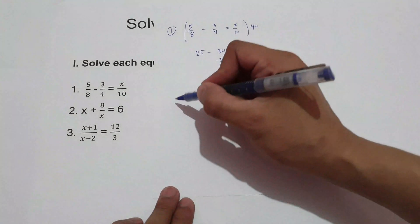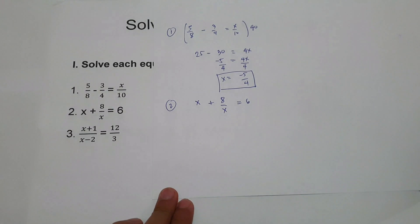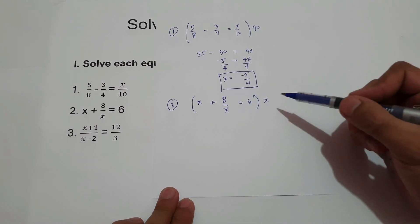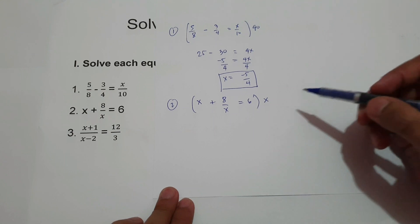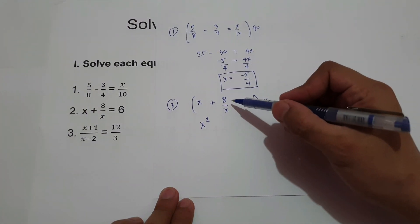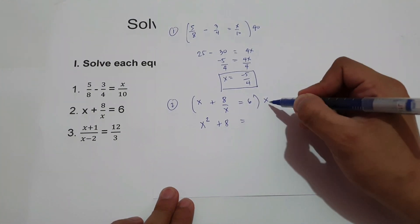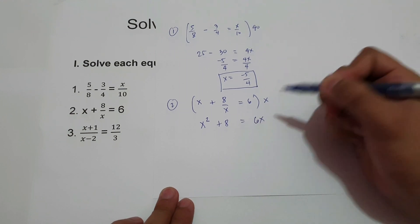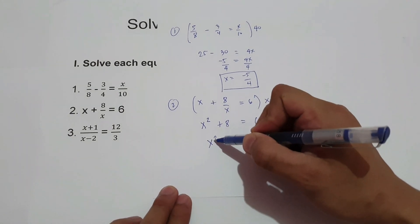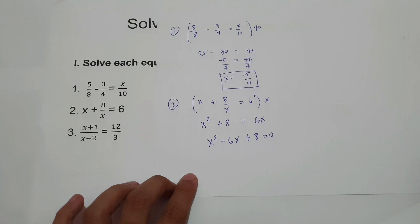Next, number 2: we have x plus 8 over x equals 6. The denominator here is x, so let us multiply the whole equation by x. We have x times x is x squared. Then x divided by x is 1, times 8 is 8. And 6 times x is 6x. Then we're going to move 6x to the side of x squared plus 8. That gives us x squared minus 6x plus 8 equals 0. So this is an example of a quadratic equation.